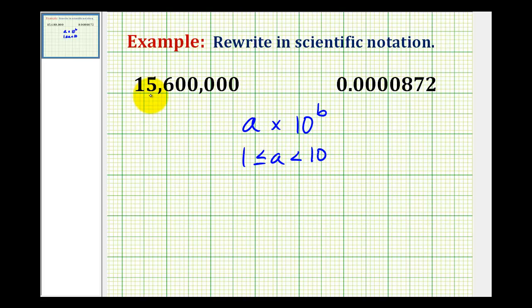So to rewrite 15,600,000 in scientific notation, we first need to determine where we'd have to place the decimal in order for A to satisfy this condition. Right now the decimal point is here, and in order to satisfy this condition for A, the decimal point would have to be placed here. Now by counting the number of decimal places from here to here, we can determine the exponent on 10.